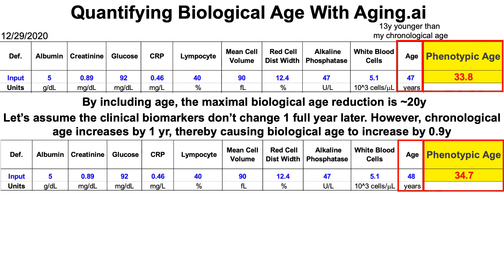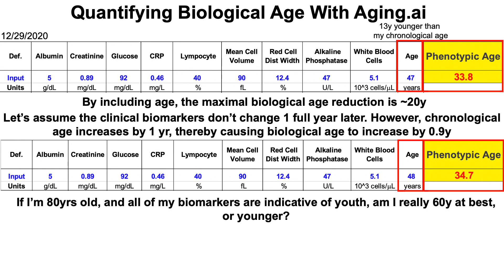If my biomarker data is the same but I age one year chronologically, it doesn't make sense that my biological age should increase. Taking this even further, if I'm 80 years old and all of my biomarkers are indicative of youth, am I really 60 years old at best? So although including chronological age in the calculation is important for being almost perfectly linearly correlated with chronological age, it may also limit biological age reductions to no greater than 20 years.